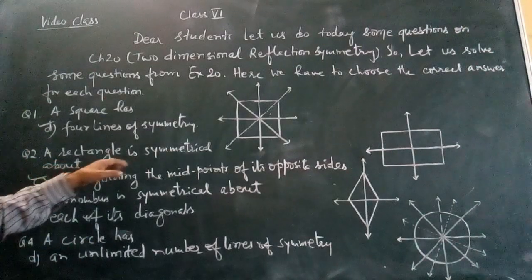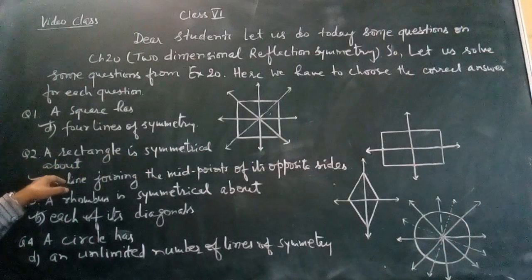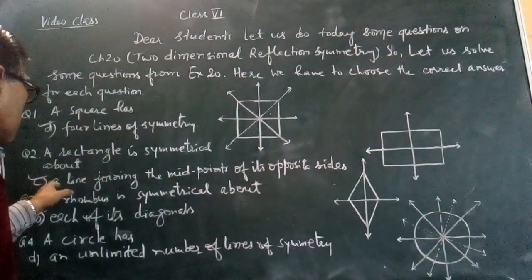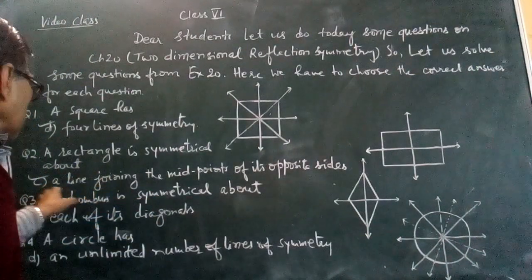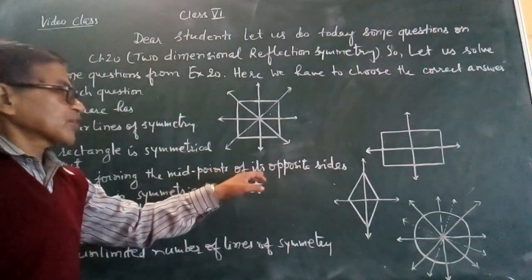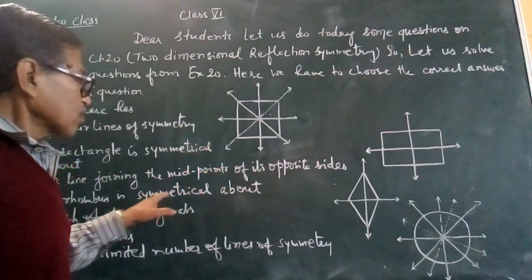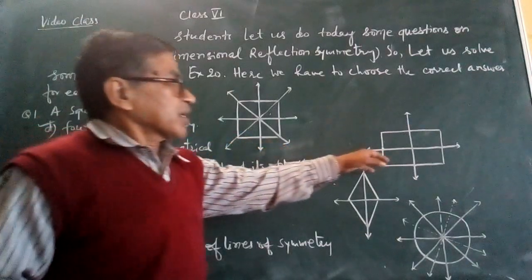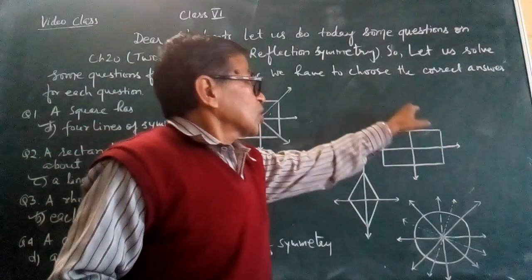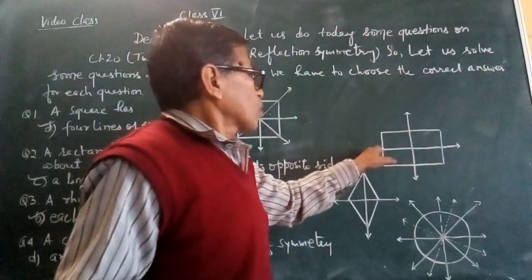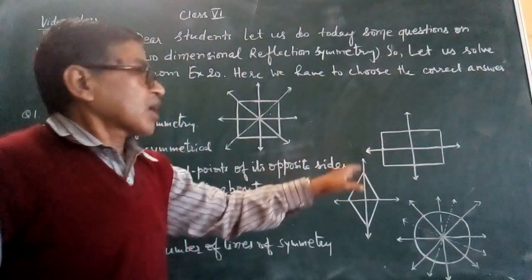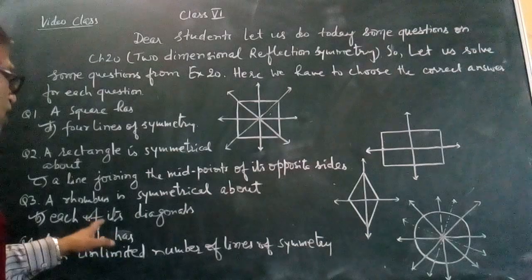Second, a rectangle is symmetrical about - again, some options are there, but the correct answer: we see a line joining the midpoints of its opposite sides. You can see the figure. This is a rectangle, and midpoints joining the opposite sides - one is this one, another is this one. So two lines of symmetry are there in a rectangle.